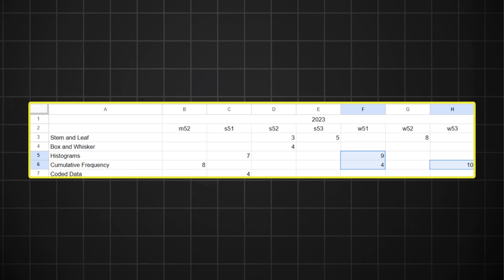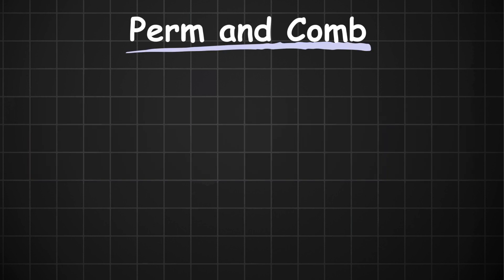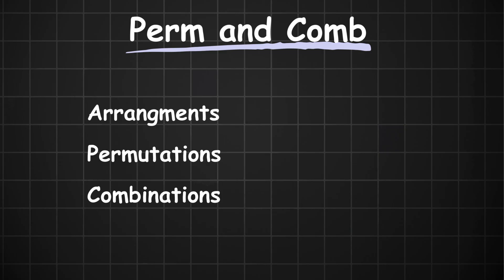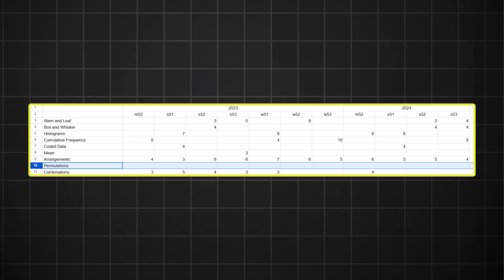But just make sure you know all your representations of data. In the permutations and combinations topic, I came across a rather peculiar statistic. So this topic splits into three: we have arrangements, permutations, and combinations. In the past two years, we haven't had a permutations question. And look, I get it. Arrangements are technically permutations. But if we take them out of the picture, there hasn't been a pure permutations question in 2023 or 2024.